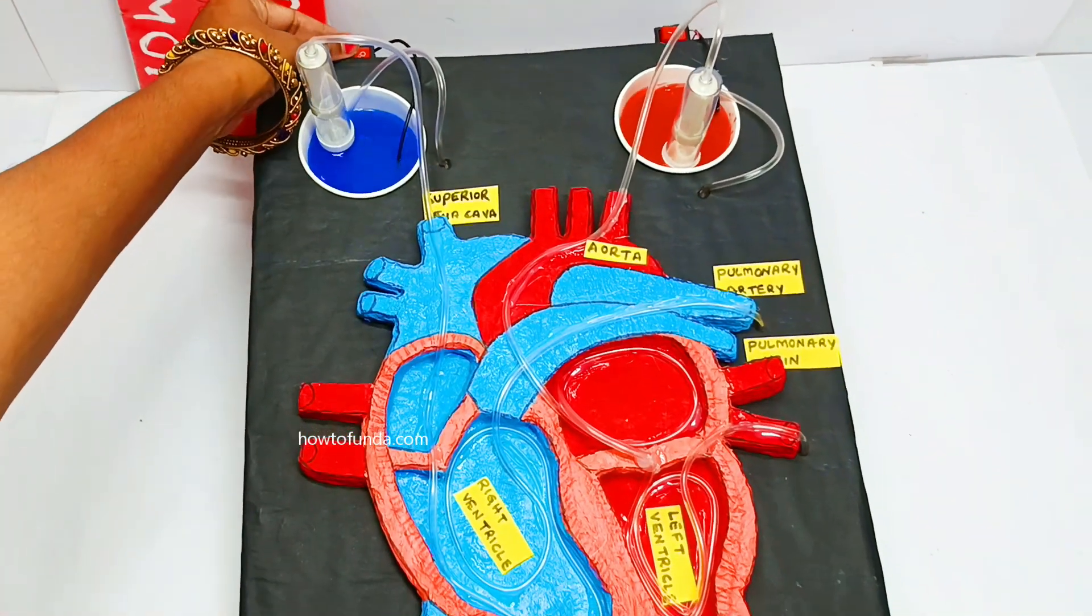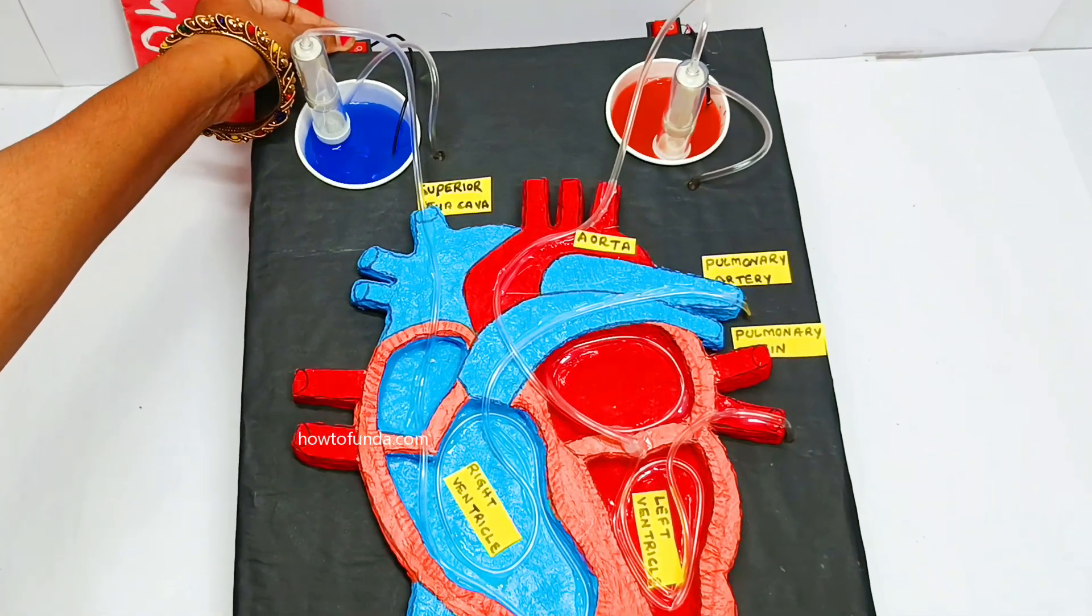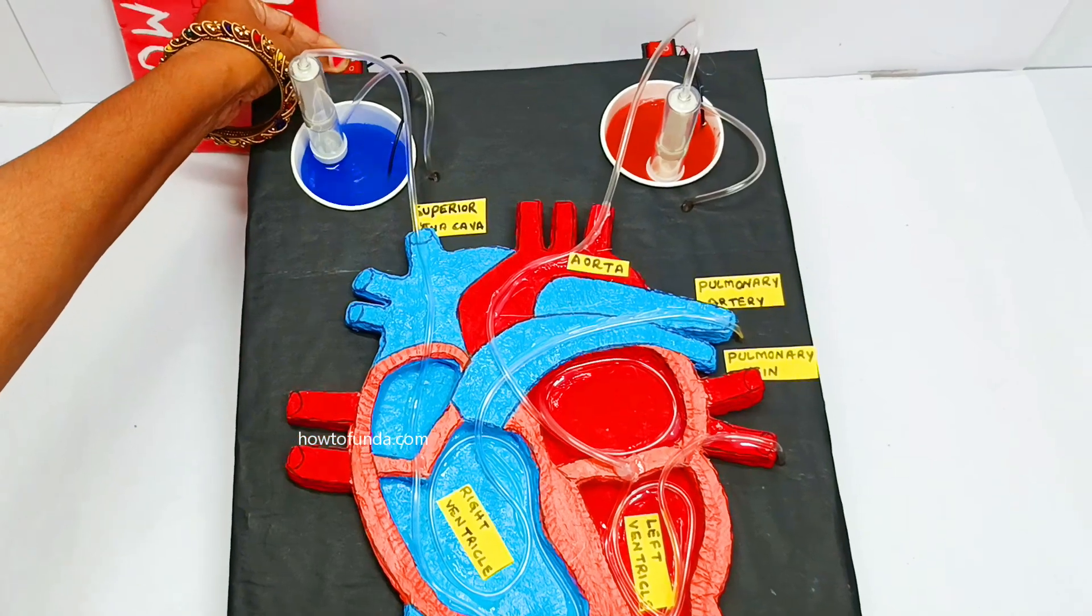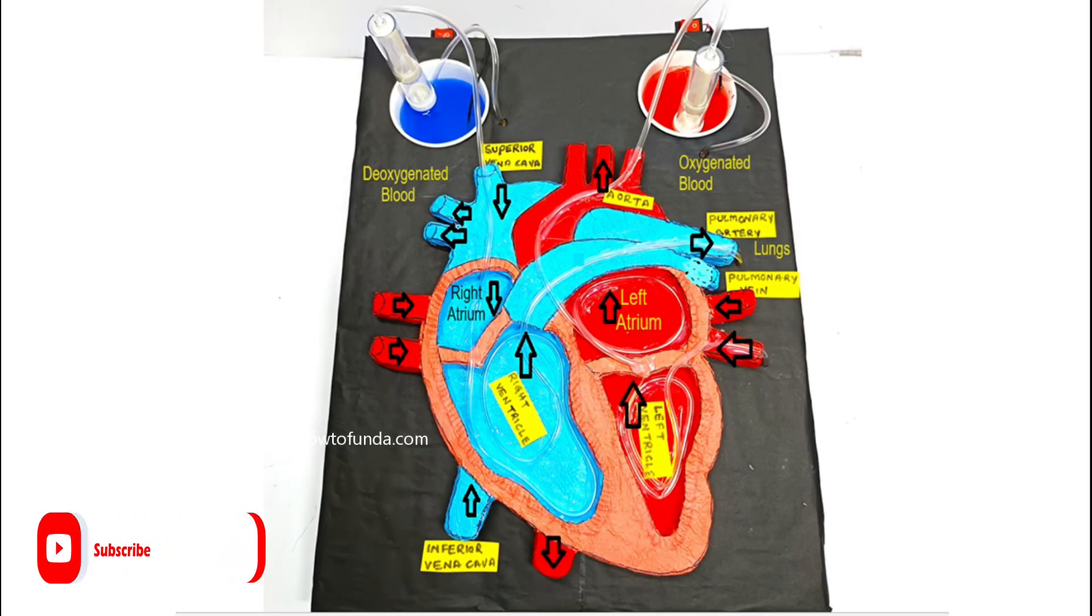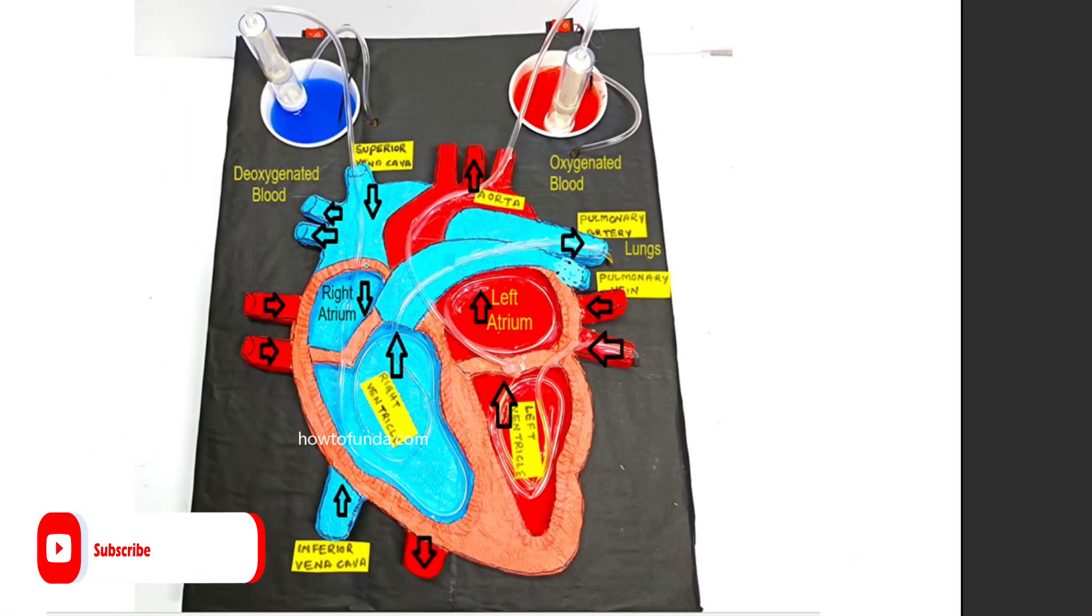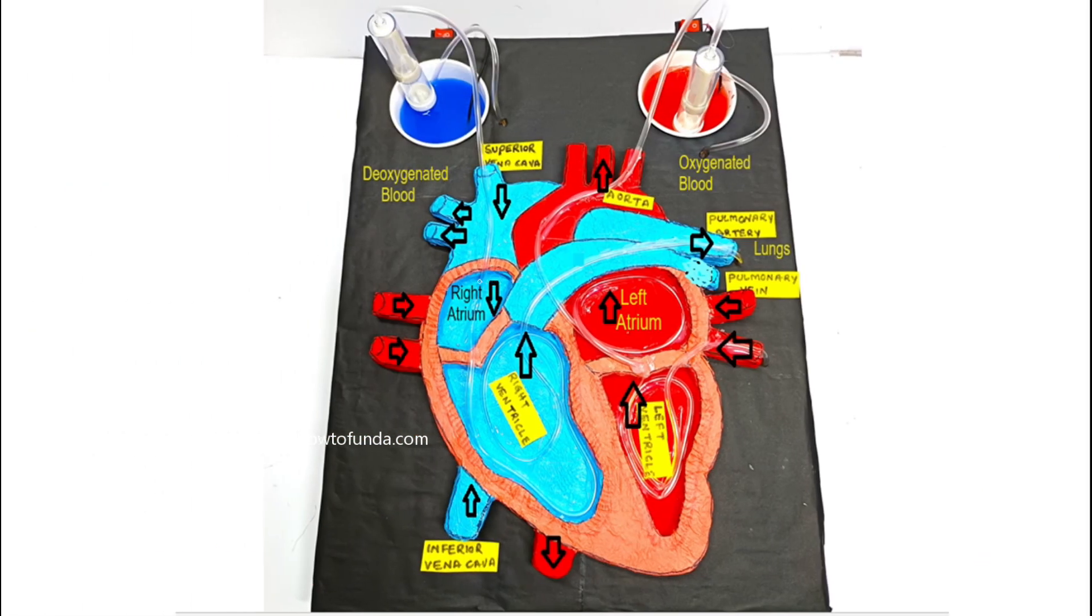So before trying to understand how the heart working model really works, we want to understand what are the structures of a heart. So the heart is having two chambers, which are two upper chambers called right atrium and left atrium, and also we have ventricles, which are right ventricle and left ventricle.